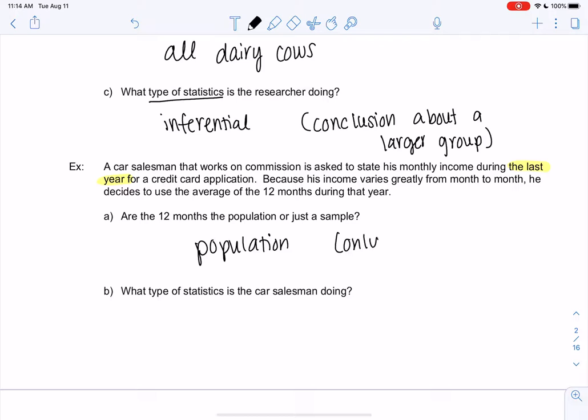And so since we're only describing the current year and we have all of the months, this would be descriptive statistics. We have data for all 12 months. We're just describing those 12 months.